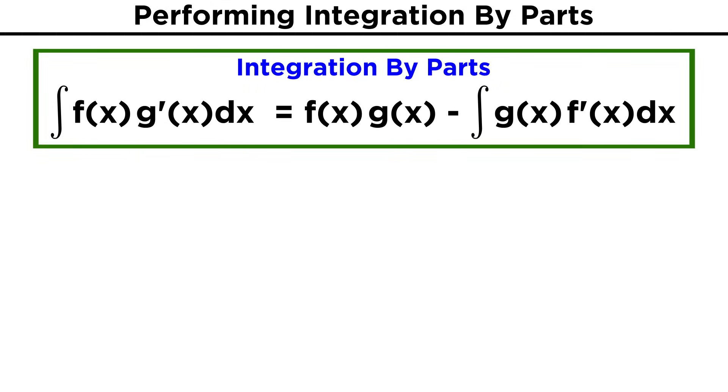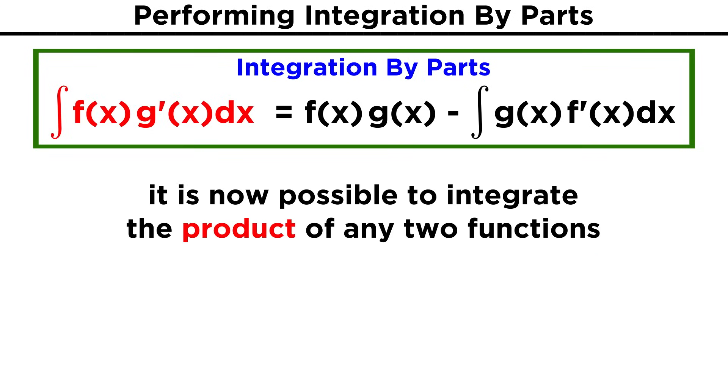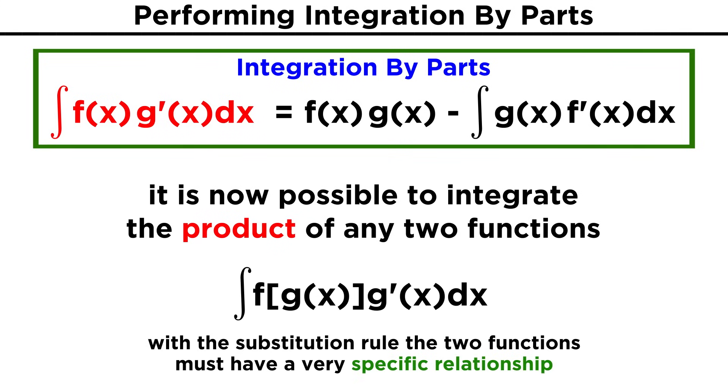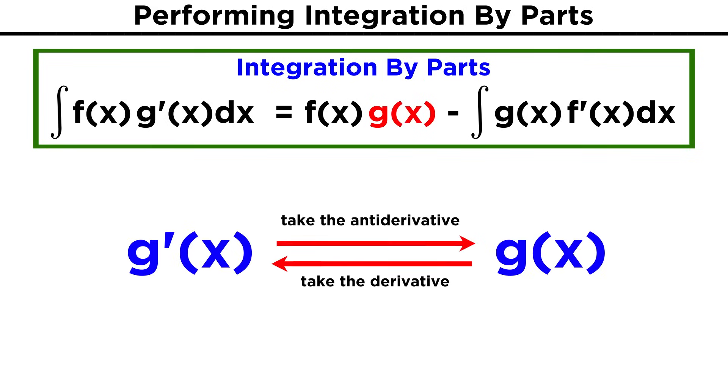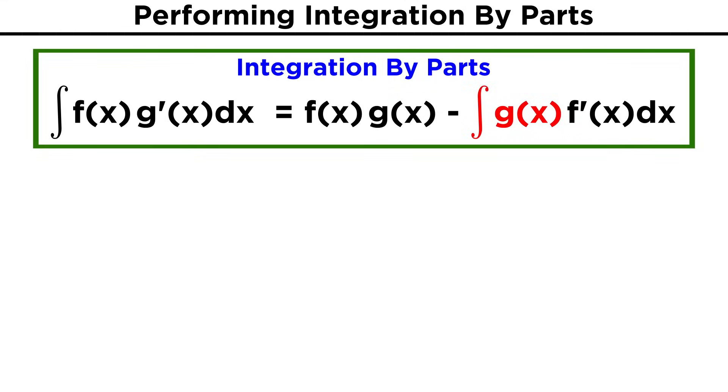And there we have the formula for integration by parts. It may look like we haven't done much, but this is actually quite powerful, because up until now we haven't had any way to integrate a product of two functions, other than the substitution rule if we were lucky enough that one part was the derivative of the other. But here we can see that if we have the product of two functions, to integrate we simply list the first function times the antiderivative of the second function, since the antiderivative of g prime is simply g, and subtract from that the integral of the antiderivative of the second function times the derivative of the first function.